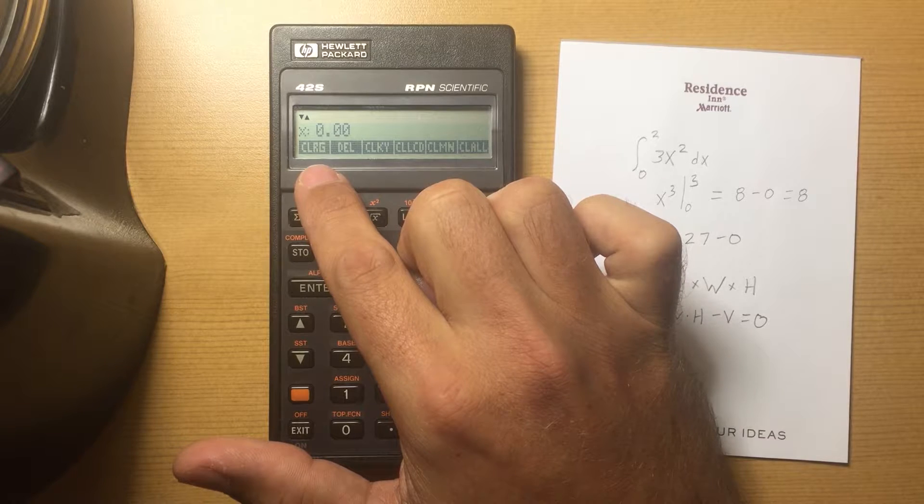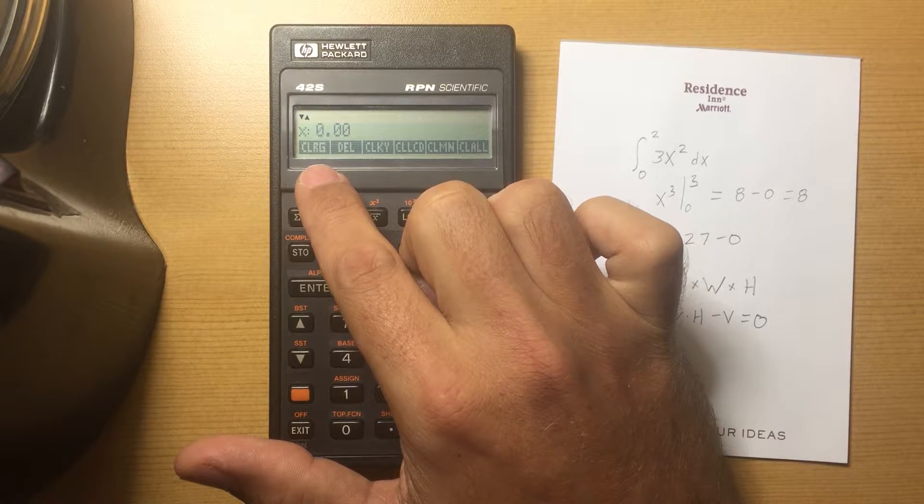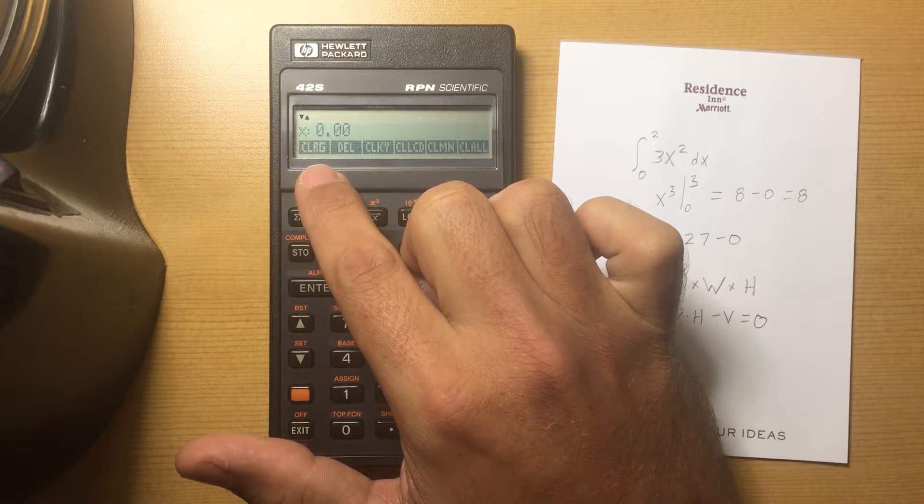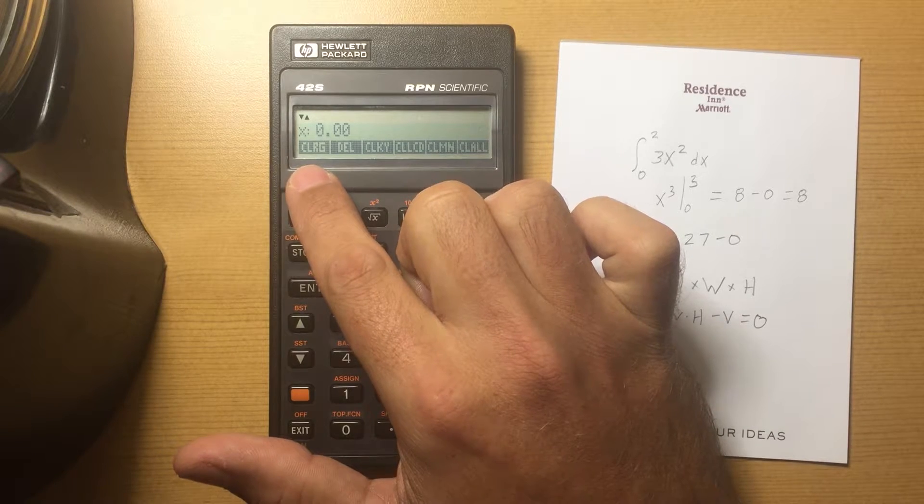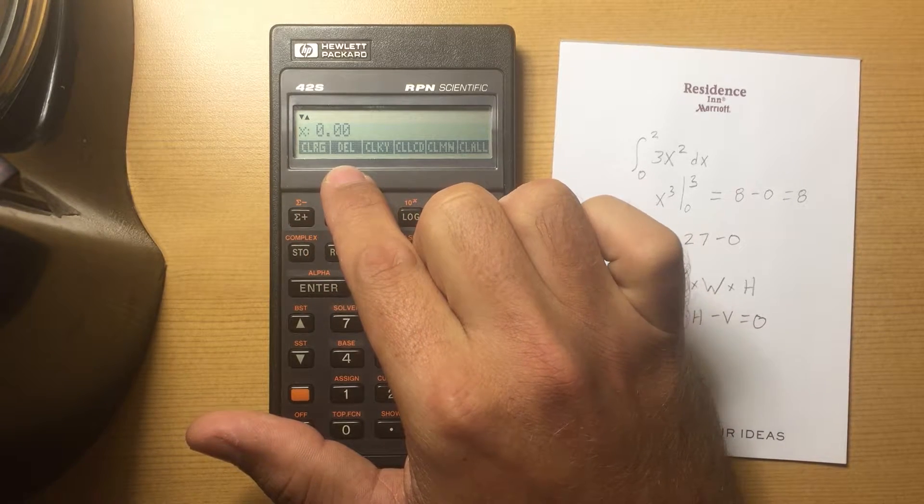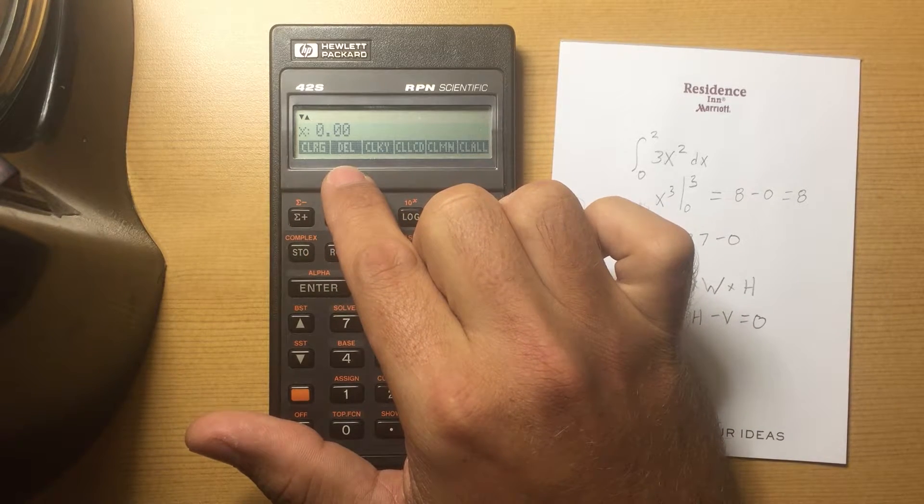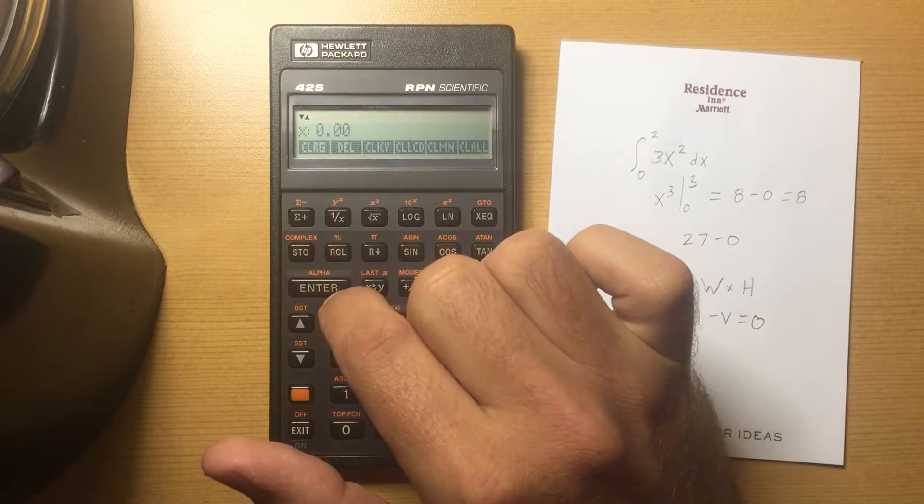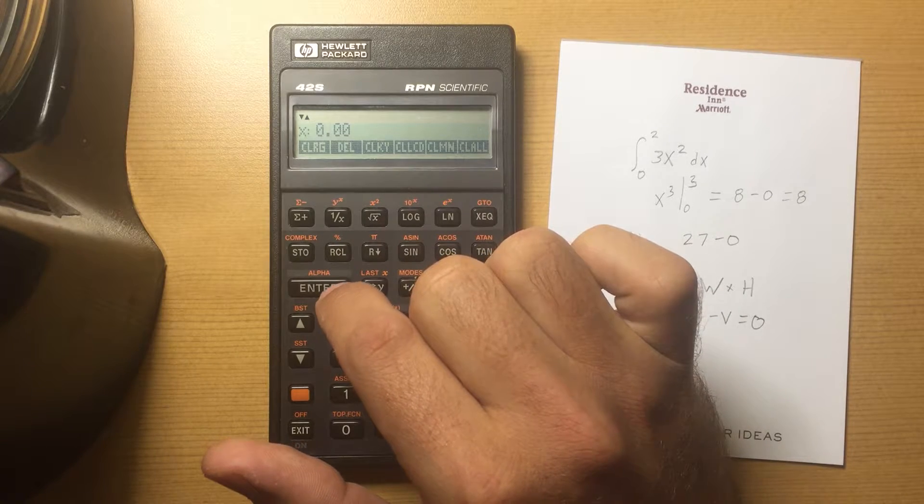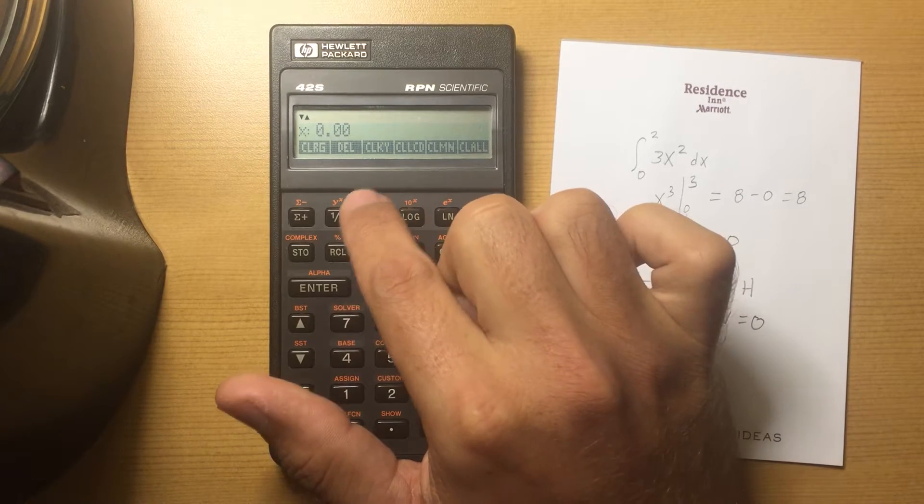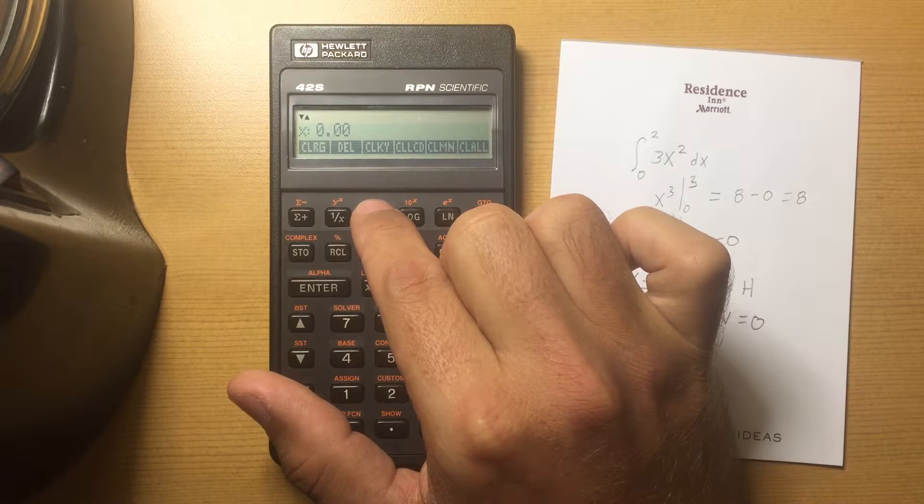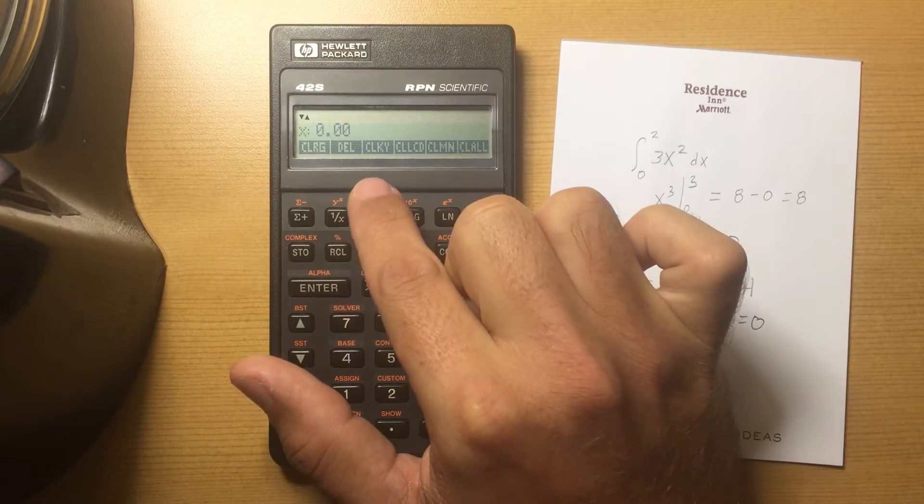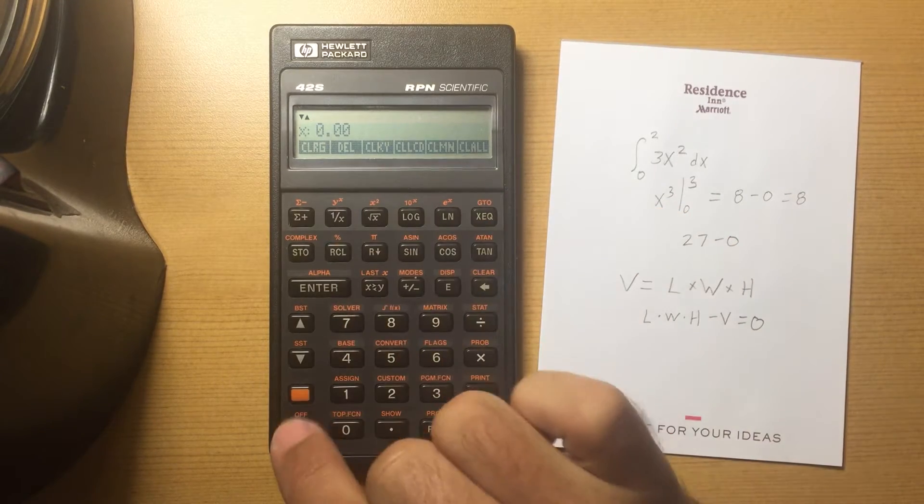This is Clear the Storage Registers. So if you have things stored in your storage registers, you can clear all those. DEL is Delete Program Lines. I believe you choose DEL and then the number of lines you would like to delete. Again, not really used here, but perhaps when you're working on a program.